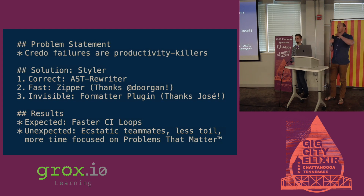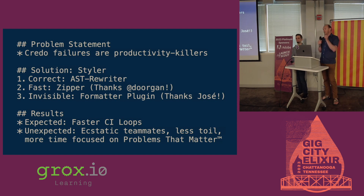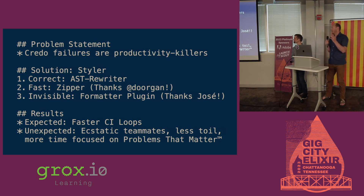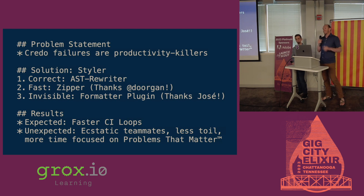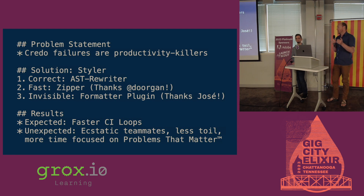So we came up with Styler — an AST rewriter that uses the zipper — to do things so quickly and invisibly for you that you just have it and your life is better. Thanks Jose for figuring out what we needed before we realized it. We knew we would get faster CI loops — and we don't mean just CI completed faster, we mean our CI didn't interrupt us needlessly as much anymore, and that's really important.